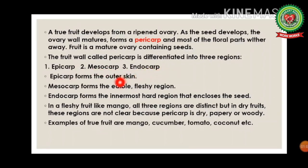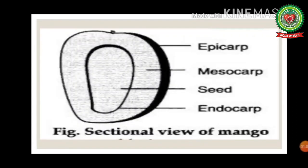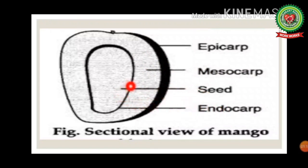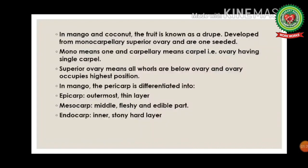The epicarp forms the outer skin. The mesocarp forms the middle fleshy part. The endocarp forms the innermost layer that protects the seed. In mango and coconut, the fruit is known as a drupe. A drupe is a fleshy fruit with a thin skin and a central stone containing the seed.